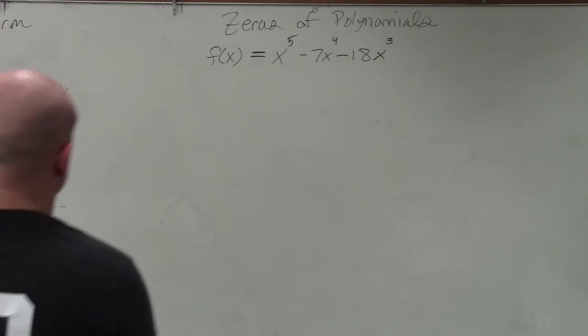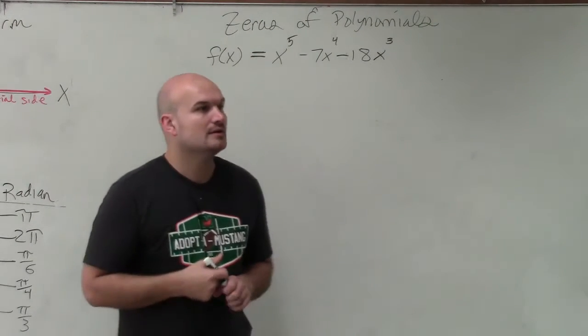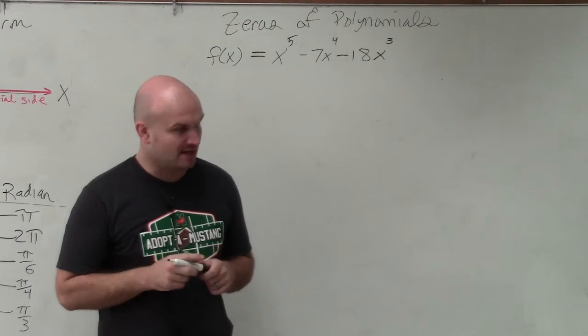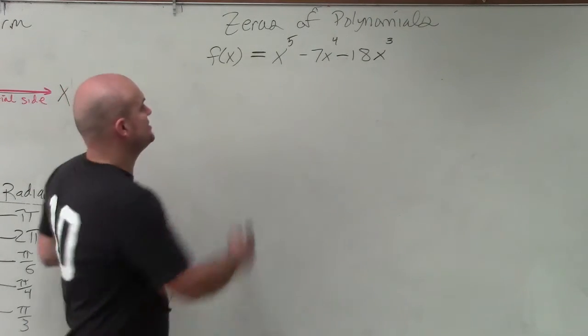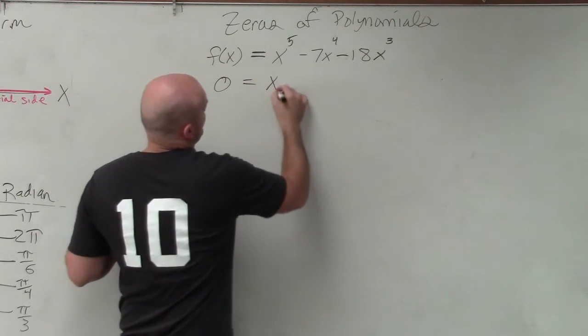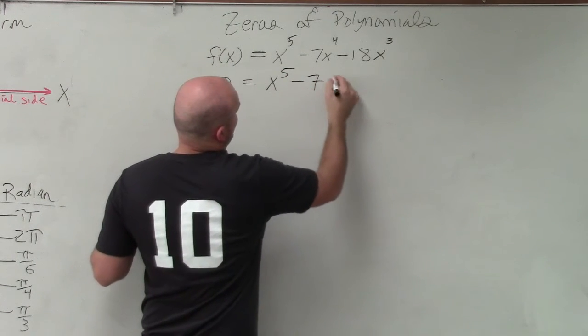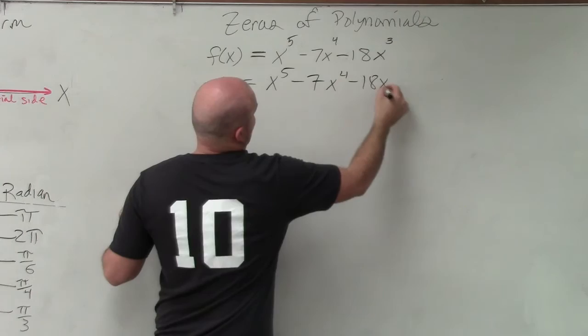All right, we're going to move on with this. I'm kind of spending a little bit too much time. I have some stuff I need to go over. So anyways, ladies and gentlemen, the process here, set it equal to 0: x to the 5th minus 7x to the 4th minus 18x cubed.